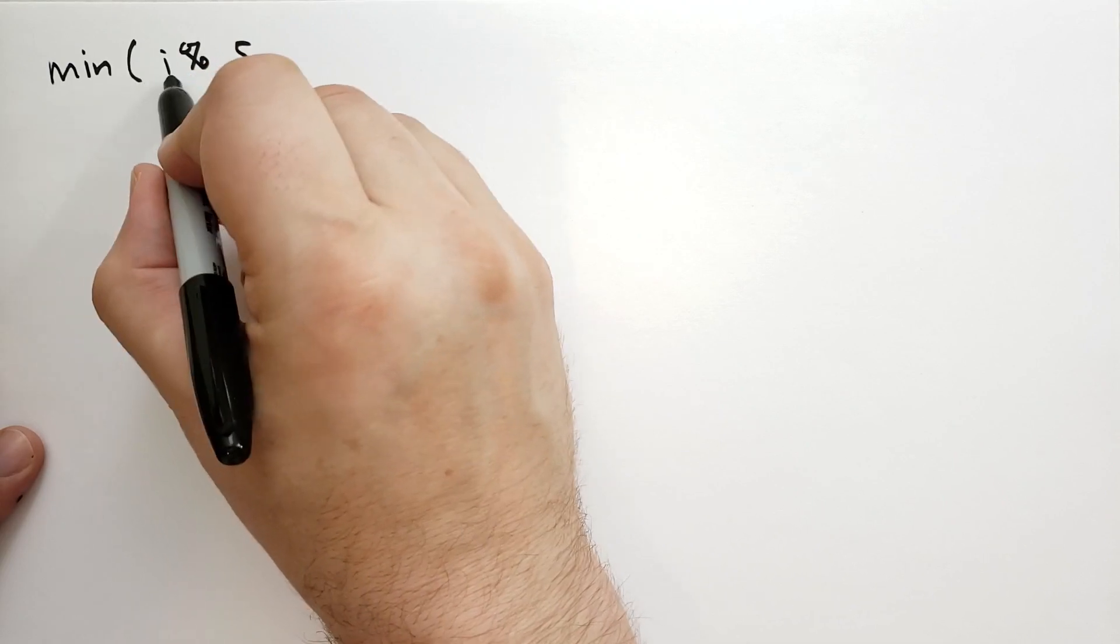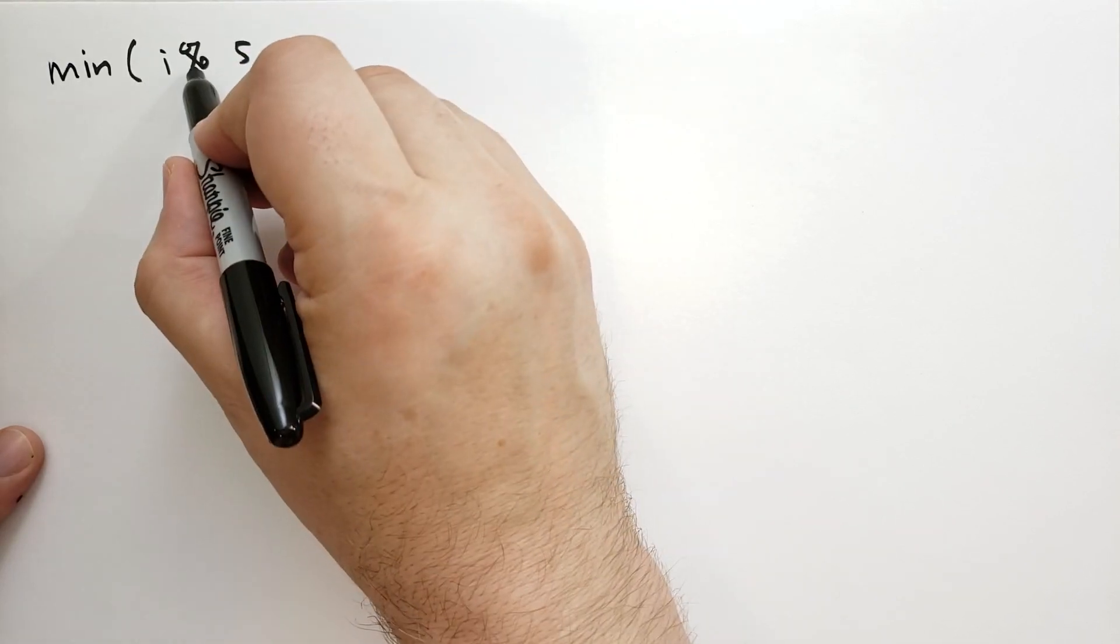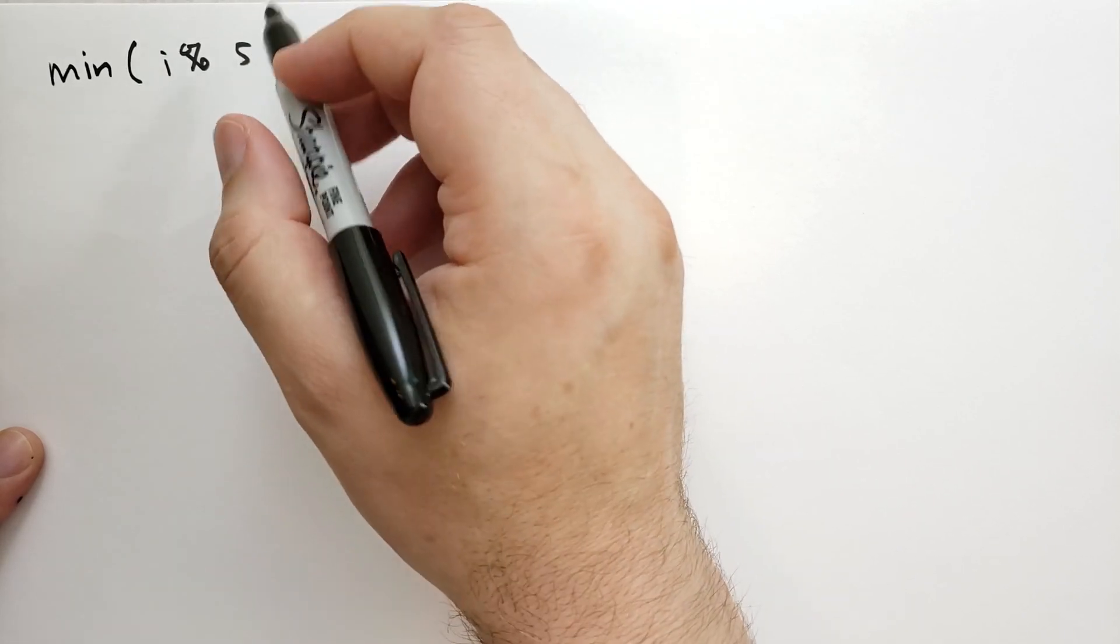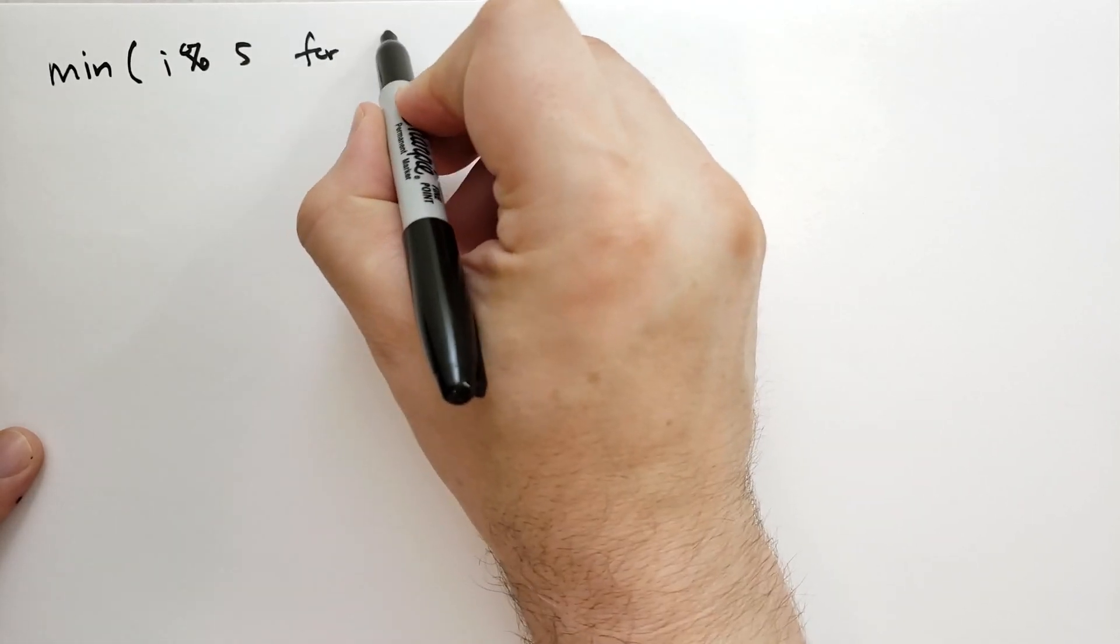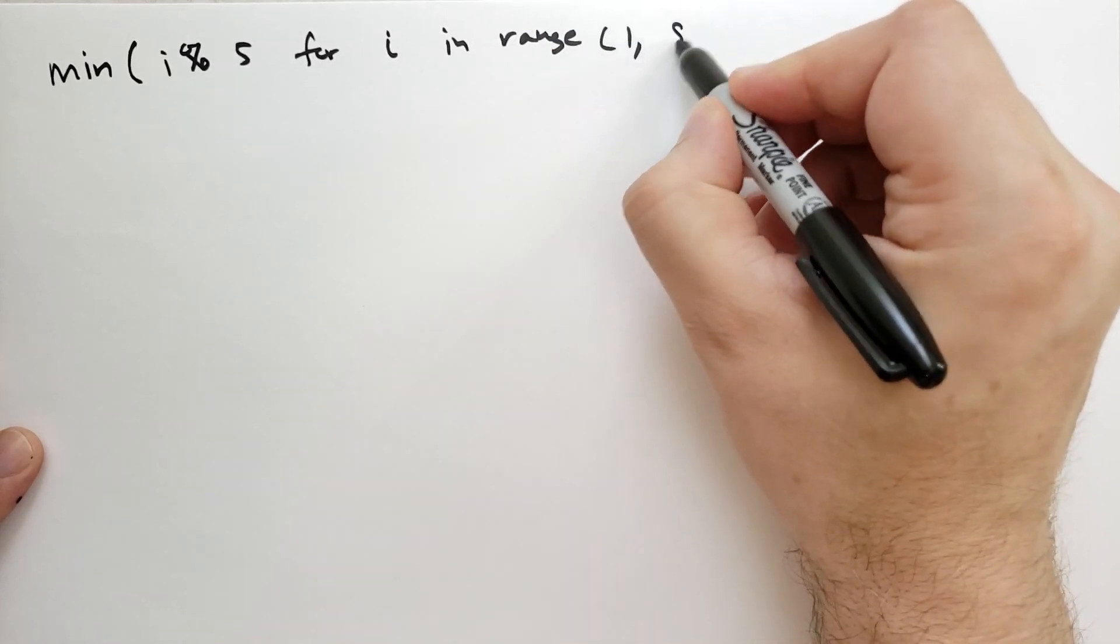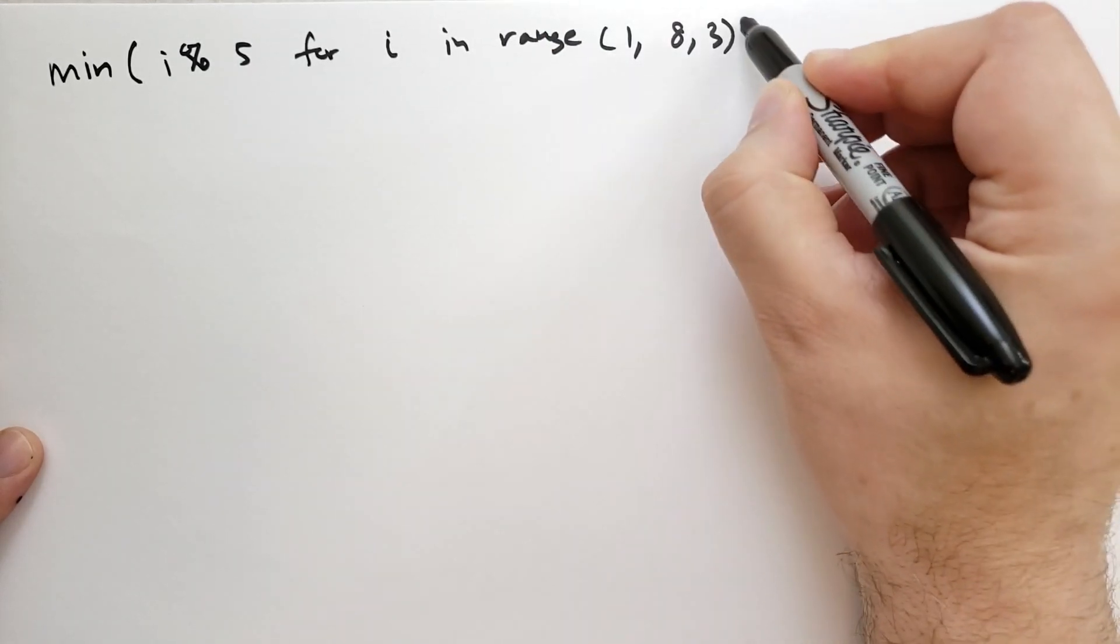So let's say for a minimum of i mod 5, so taking i divided by 5 and get the remainder back, for i in range, let's say starting at 1, going up to 8, and having a step of 3.